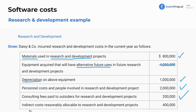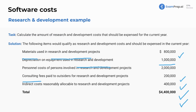And lastly, indirect costs reasonably allocable to research and development projects — that's another item that will be expensed. For those of you who want to see the answer, here we are.